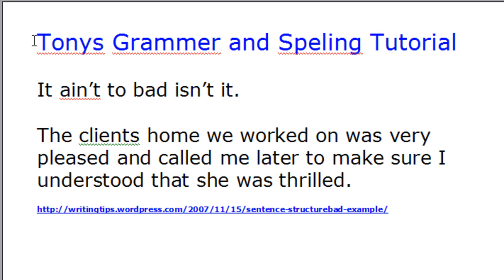Now to a certain degree this is personal preference, but the way Microsoft Word works is if you type or create a spelling error — and sometimes grammar and spelling are sort of close. In other words, sometimes what you think is a grammar error, Word will actually look at as a spelling error. But typically spelling errors have a red squiggly line under them. Right here we have a red squiggly line under 'Tony's,' also under 'grammar,' and also under 'spelling.' So it's telling me something is wrong.